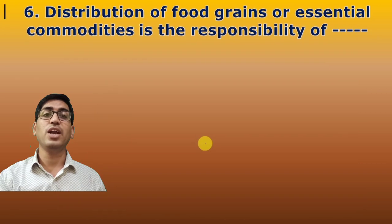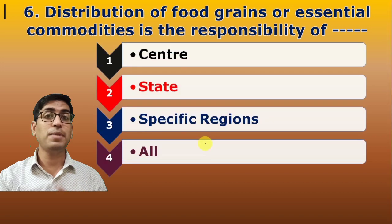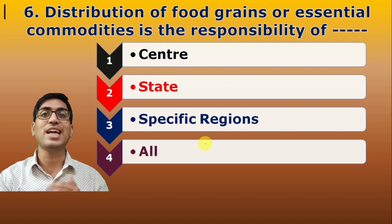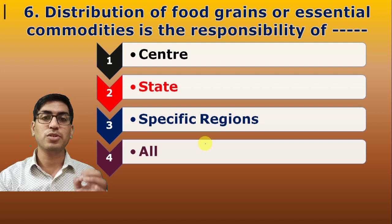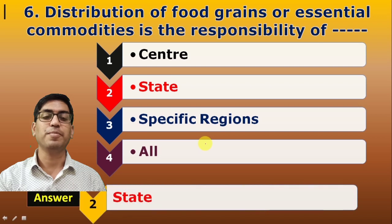Sixth question: Disbursement of food grain and essential commodities is the responsibility of whom? Procurement is already done, and allocation to the state has happened. Now disbursement to the public through fair price shops — that is the responsibility of the State.